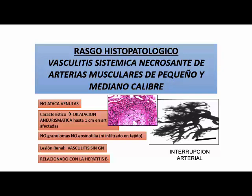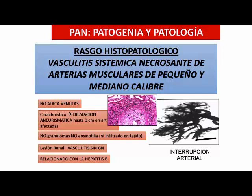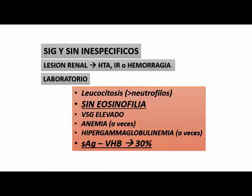El rasgo histopatológico es vasculitis sistémica necrotizante. La lesión renal puede asociarse a hipertensión e insuficiencia renal, es una lesión fundamentalmente vasculítica, no es una glomerulonefritis. Puede haber leucocitosis, no hay eosinofilia. La velocidad de sedimentación puede estar elevada, puede haber anemia, hipergammaglobulinemia, y el antígeno de superficie suele estar presente en el 30% de estos pacientes.